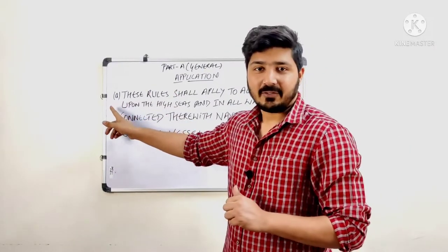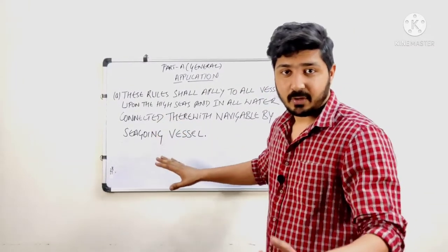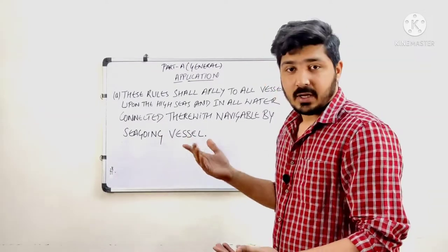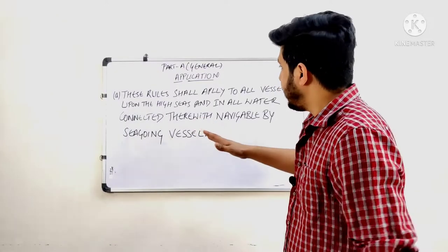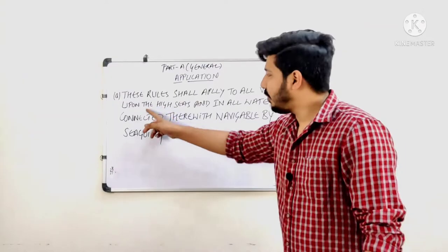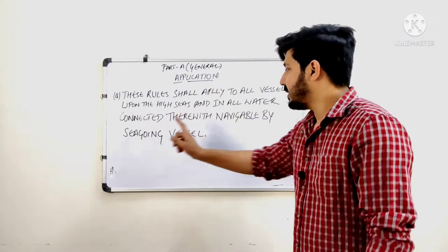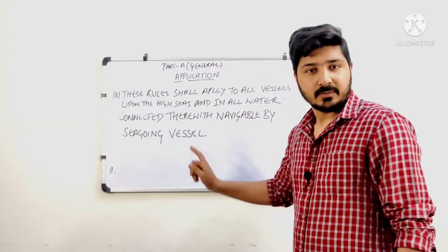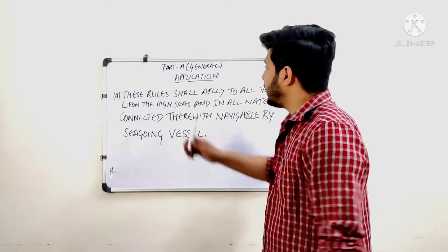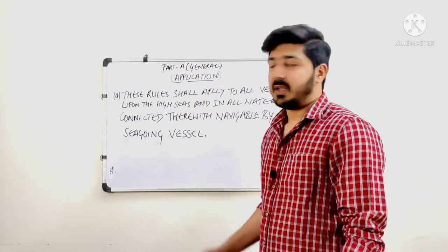You can open your book and match these things side by side. Rule 1 Part A states: these rules shall apply to all vessels upon the high seas and in all waters connected therewith navigable by seagoing vessels. The first rule is about application — it explains where these rules are going to be applied and to whom.